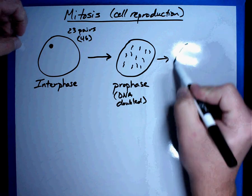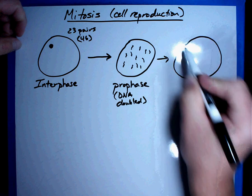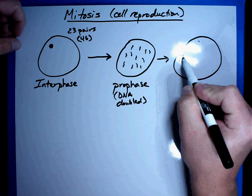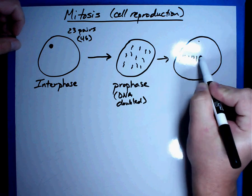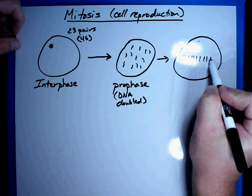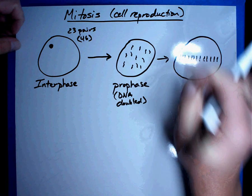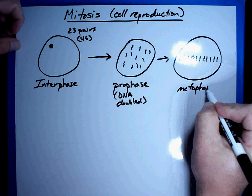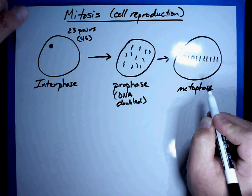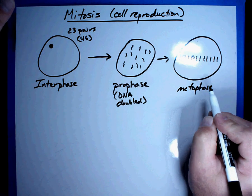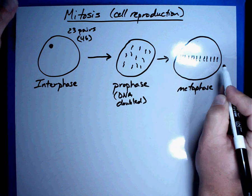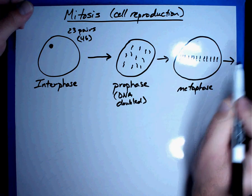After it's all doubled, what happens next is what is called metaphase. And in metaphase, what happens is the DNA starts to line up in the middle of the cell. Now this is an easy one to remember because meta reminds me of the word middle. They line up in the middle. And so I have all of this DNA lined up in the middle of the cell.